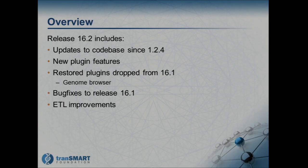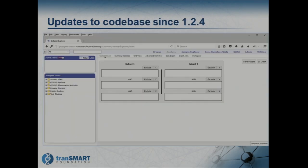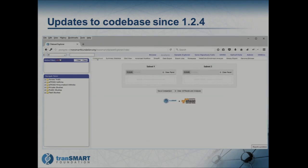I'll talk a bit about some improvements to ETL, the single-step installs, and some other things. We'll start with the updates to the code base, because there's one change that you will notice as soon as you go into 16.2. This is the Analyze tab cohort selection in TransMart all the way through to 16.1 — you have subsets 1 and 2, and three boxes you can fill in, with more boxes appearing as you fill in enough. You can't put a change like this into a bug-fix release like 16.1.